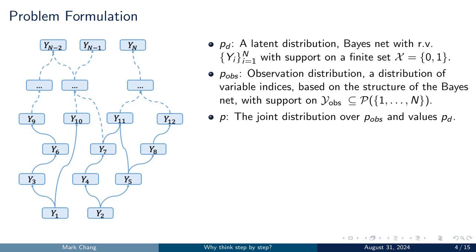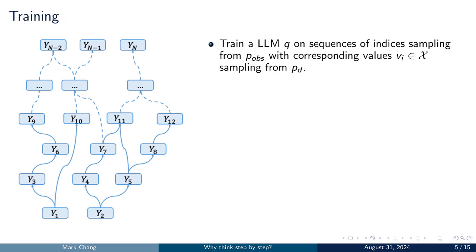We define p as the joint distribution over p-obs and p-d. For the model to accurately predict the value of a variable, it must capture this distribution from the training data. During training, a large language model q is trained on a sequence of indices sampled from p-obs and their corresponding values sampled from p-d. For example, a training instance might consist of four lines, with the first line denoting a target variable y-7. The second and third lines are sampled from the local neighborhoods of y-7, with indices from p-obs and values from p-d. The final line includes the target variable y-7 and its corresponding values, presenting the index, values, and neighboring nodes in the Bayesian network.